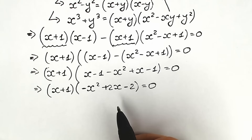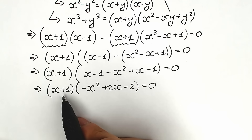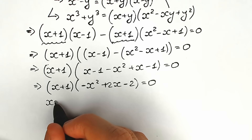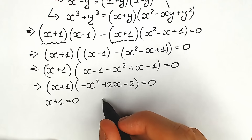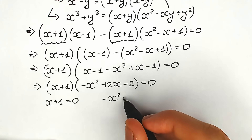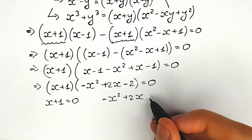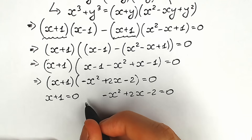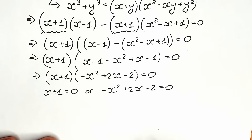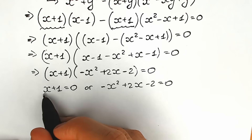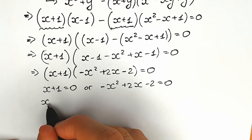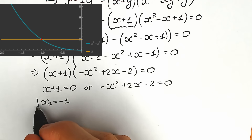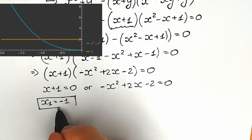Since a product of two expressions equals zero when either factor equals zero, we have two cases: x plus 1 equals 0, or minus x squared plus 2x minus 2 equals 0. From the first case, x₁ equals minus 1. That is our first root. We'll check it a little later.